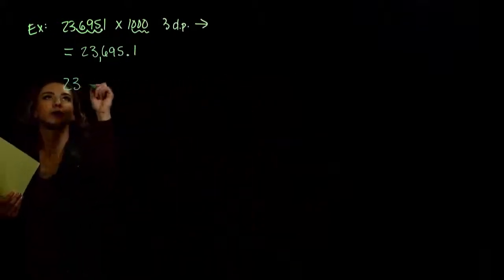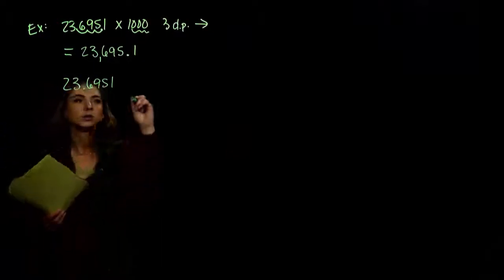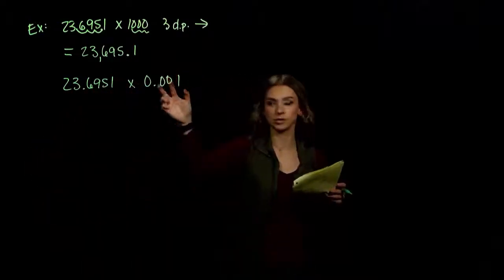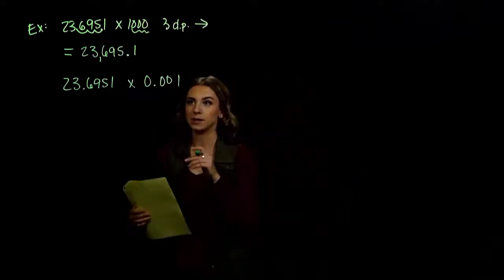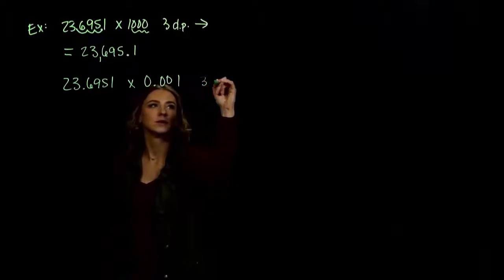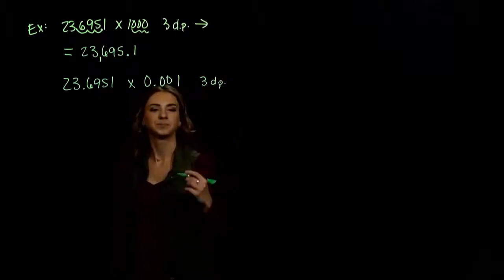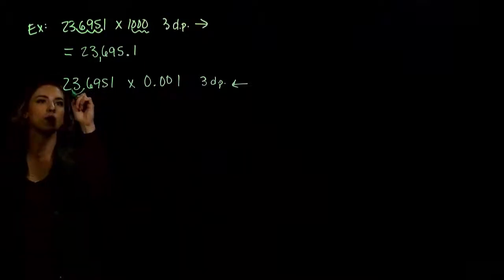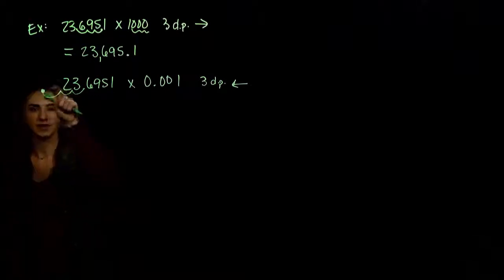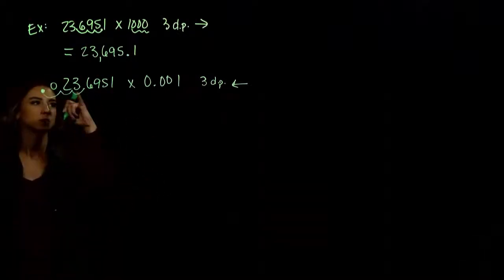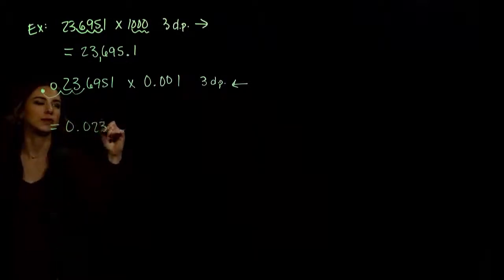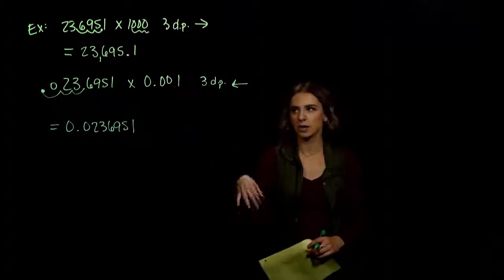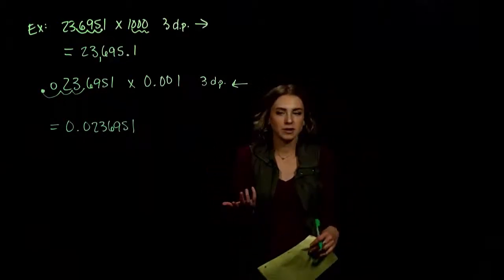Same story, but let's multiply by a really small number: 23.6951 times 0.001. It's a very small number, so we're not counting zeros — we're counting the number of decimal places. In 0.001 we've got one, two, three decimal places. So we move three decimal places to the left, making a smaller number. Filling the space with zeros, we get 0.0236951. You could physically check it by stacking and multiplying, but if we recognize the pattern, it saves a lot of time.